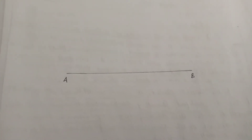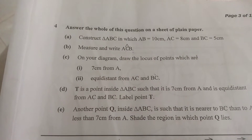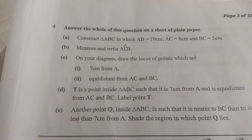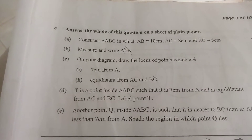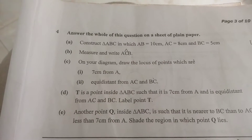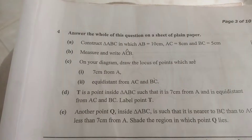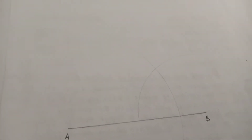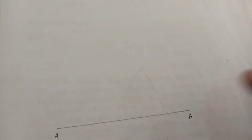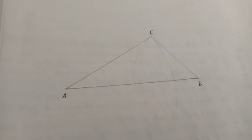This is our AB. Let's now construct the next vertex C. The question reads AC is equal to 8 cm and BC is equal to 5 cm. So we measure 8 cm and strike an arc from A, and then 5 cm, we strike from B. Where they meet, that's our C. That is our 8 from A, and that is our 5 from B. Where they are meeting, that is our C. That's our triangle now — triangle A, B, C.